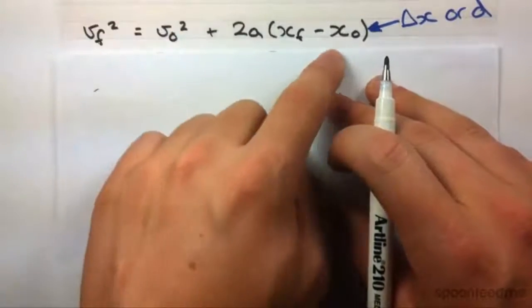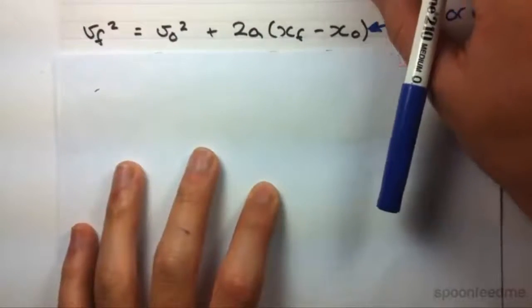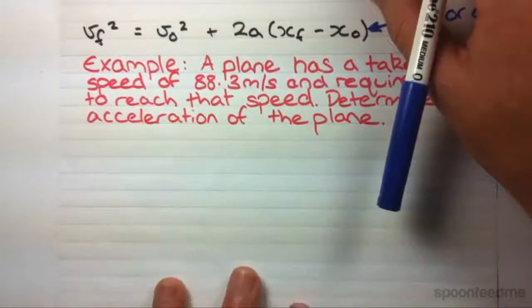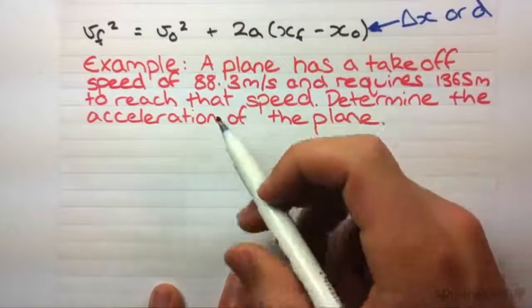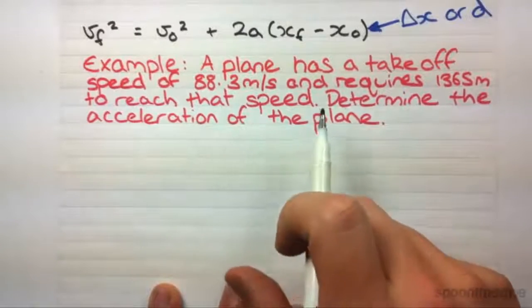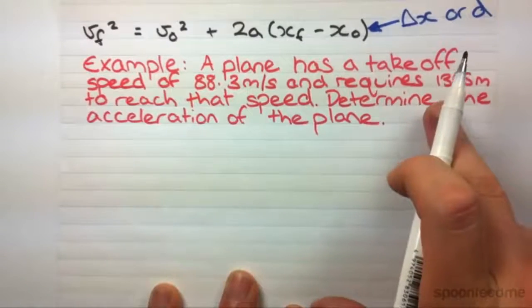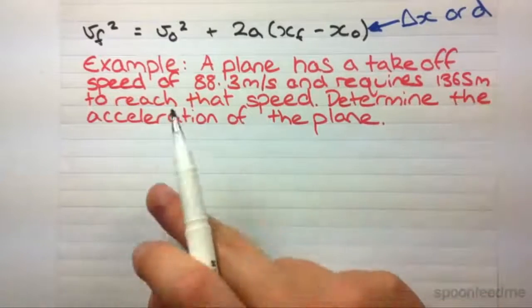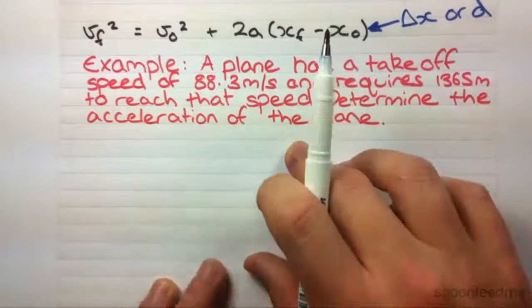You can see this come in a different number of forms. So, the example I've got for us here. A plane has a takeoff speed of 88.3 metres per second and requires 1365 metres to reach that speed. Determine the acceleration of the plane.